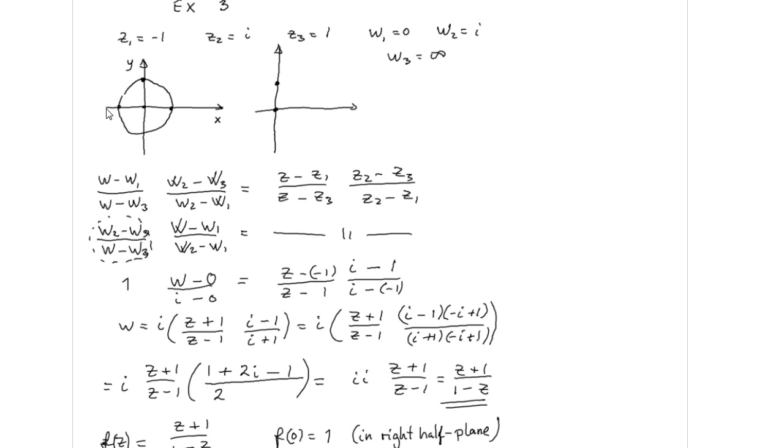We can place these points on a circle. And the mapped points are w1 equal to 0, w2 equal to i, and w3 at infinity. We are using the general formula for finding the Möbius transform.